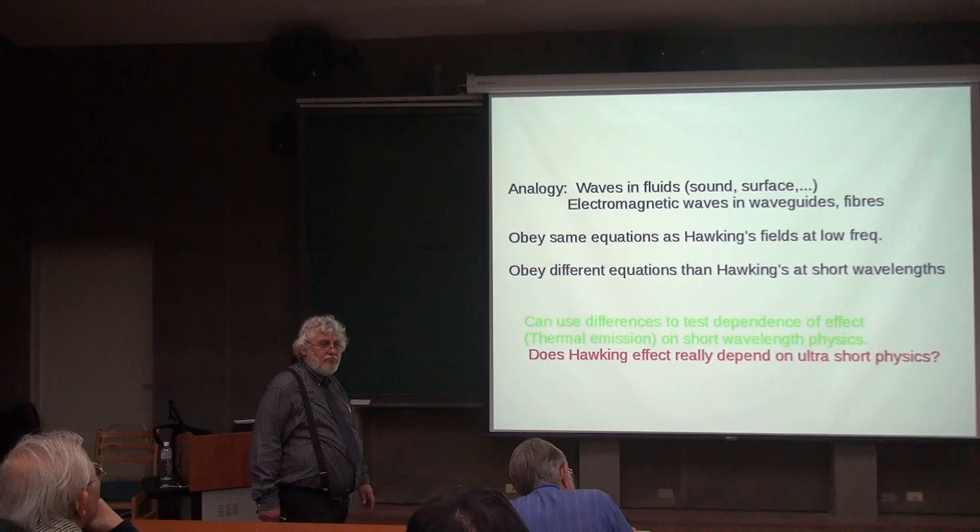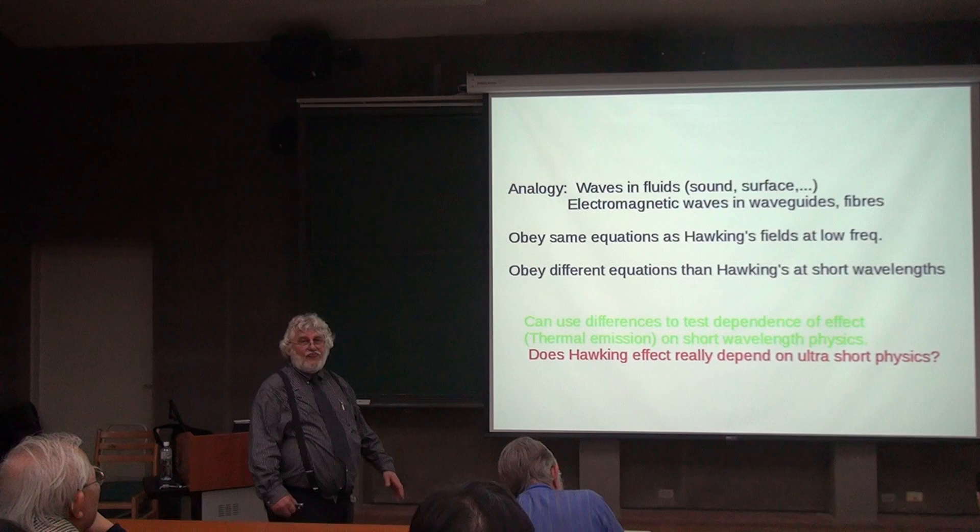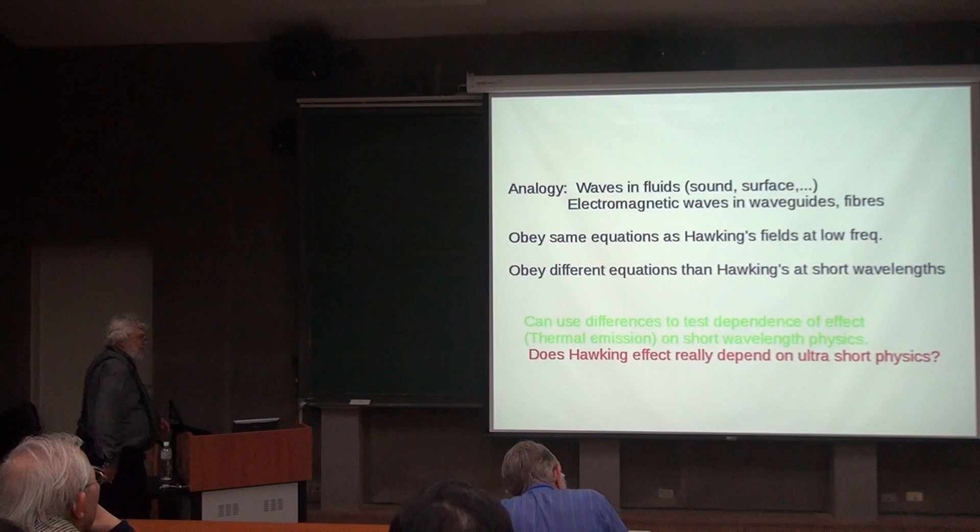After all, Hawking's derivation relied on this e to the 10 to the 5th, which was silly. Here we've got a chance of looking at a system which doesn't rely on e to the 10 to the 5th. Does one still get the thermal radiation?